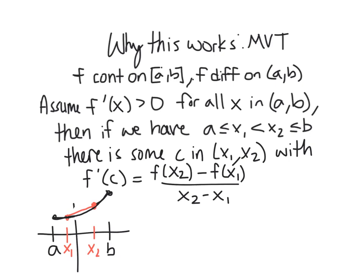So let's think about how the conclusion actually helps us. So now we'll assume, we'll only look at one case, the other case is similar. We'll assume that the derivative is always positive on our open interval from A to B. And so if we take any two points in this interval, so I have x1 and x2 down here, x1 could be A or anything in between, and x2 could be as far right as B, but the key is x2 is to the right of x1.